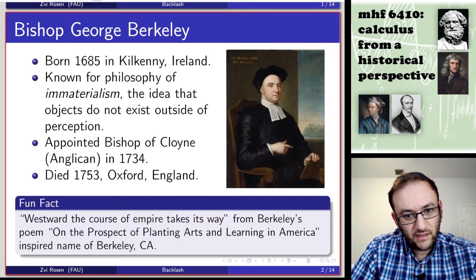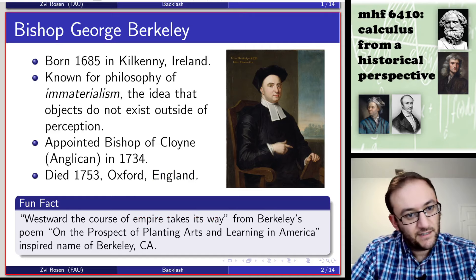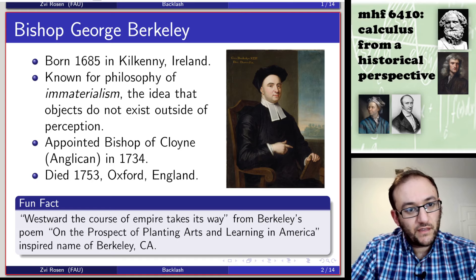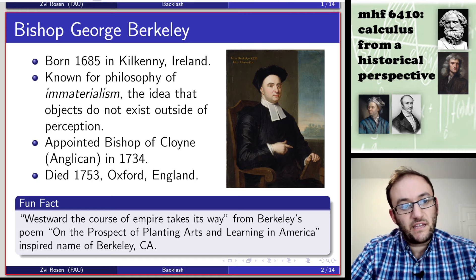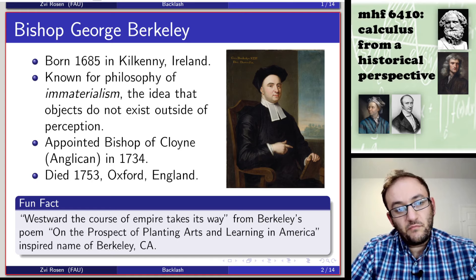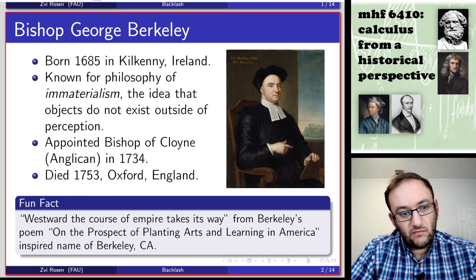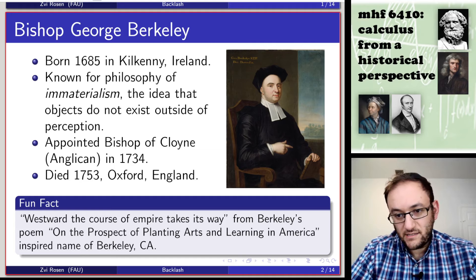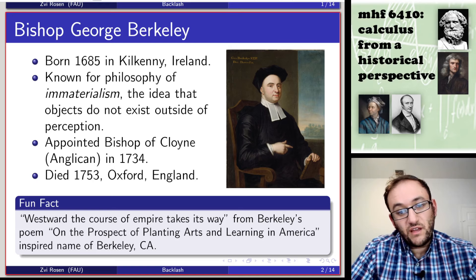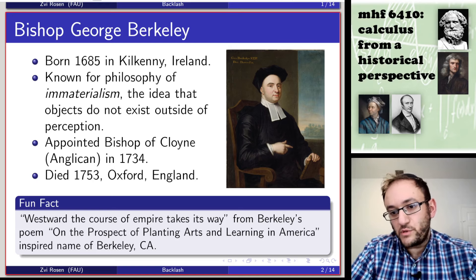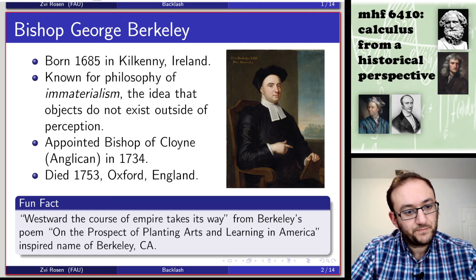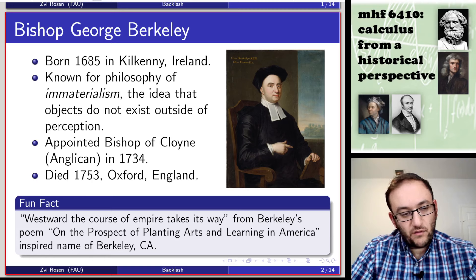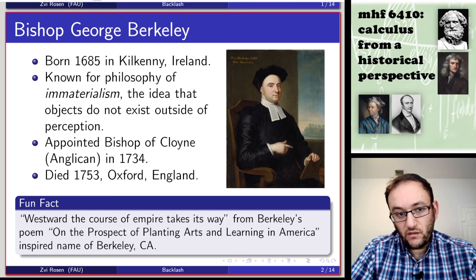The main character in this lecture is Bishop George Berkeley. Berkeley was born in 1685 in Kilkenny, Ireland. He was known primarily for philosophy. He innovated the philosophy of immaterialism, the idea that objects which we see and perceive do not have an independent existence outside of our perception. He was a religious leader, appointed the Bishop of Cloyne in the Anglican Church in 1734, and he died in 1753 in Oxford, England.